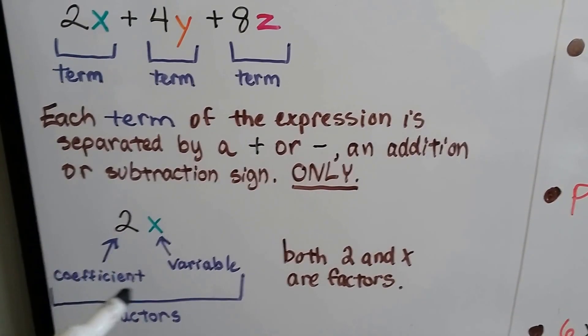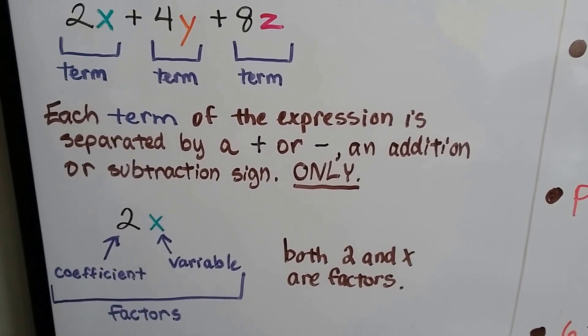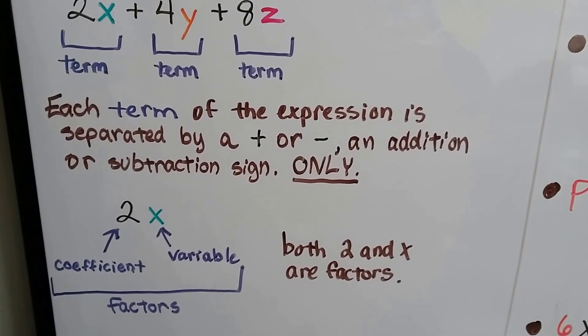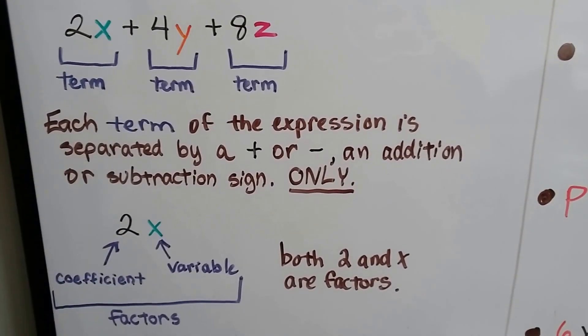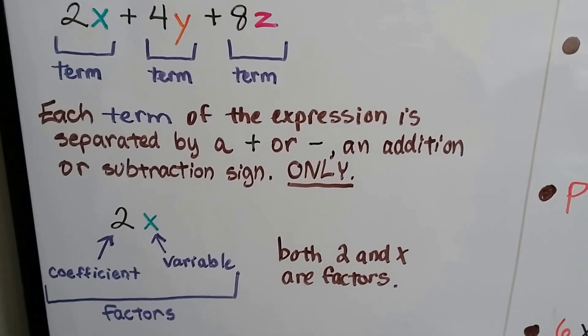This 2 is a coefficient, that x is a variable, it's a letter of the alphabet taking the place of an unknown amount, but they're both factors. Both 2 and x are factors. 4 and y are factors, 8 and z are factors. The 4 is a coefficient to the y, the 8 is a coefficient to the z.